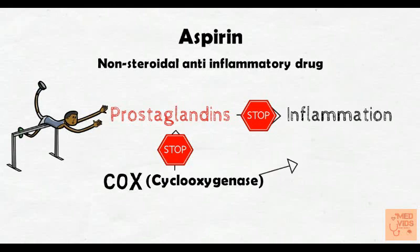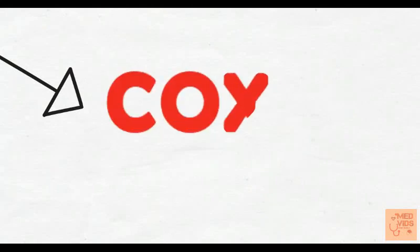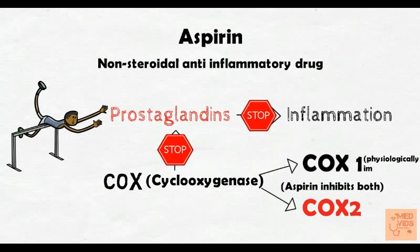The cyclooxygenase enzyme has two isoforms: cyclooxygenase-1 and cyclooxygenase-2, which is responsible for inflammatory reactions. Aspirin, being a non-selective COX inhibitor, inhibits both isoforms. The COX-1 isoform is responsible for physiological activities, whereas the COX-2 isoform is responsible for inflammatory reactions.